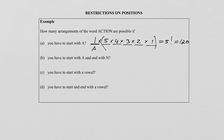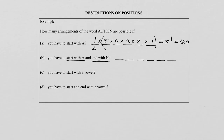Let's now move to part B of this question. We still use the letters from the word ACTION, but now they say the word has to start with an A and end with an N. So what they do is restrict the first position as well as the last position. Let's draw our six lines to represent the six positions. The first position is restricted to the letter A, and the last position — position six — is restricted to the letter N, but there are no restrictions in between. The first position can be done one way, and the last position can also be done only one way.